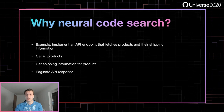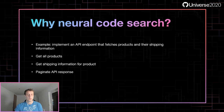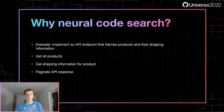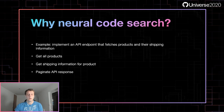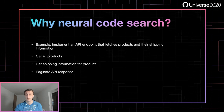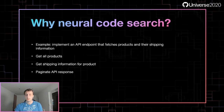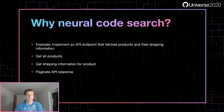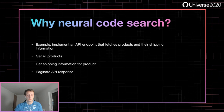For example, say I'm a new developer at a company and I get a ticket to implement an API endpoint that fetches products and their shipping information. Traditionally, I'd start searching through all classes and functions mentioning products or shipping. Depending on the size of the codebase, there may be a lot of code to go through with no good way to automatically narrow down results until you get more familiar — a bootstrap problem all developers eventually overcome. With CodeSnippetSearch, I'd enter general queries like 'get all products,' 'get shipping info for product,' and 'paginate API response' to automatically surface the best possible results.